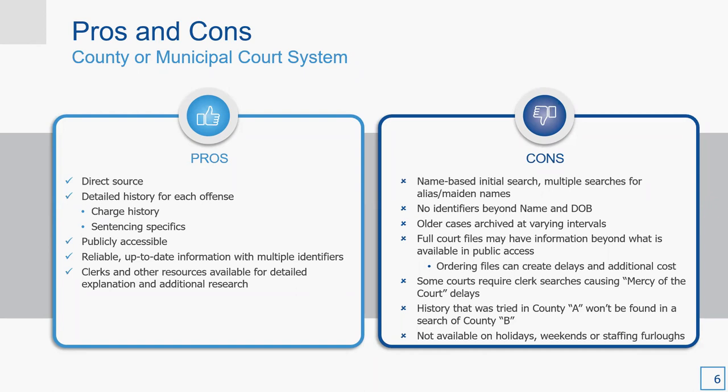On the pros: county courts are a direct source — that's where it happened. There's a detailed history for each offense, including charged history and sentencing. It is publicly accessible, and the information is typically the most reliable and up-to-date. For instance, if someone has a deferred adjudication and then petitions the court after two years of probation to have it dismissed, the court record will typically reflect that dismissal. Clerk-based searches can also provide additional resources and more expansive documents related to a specific case.